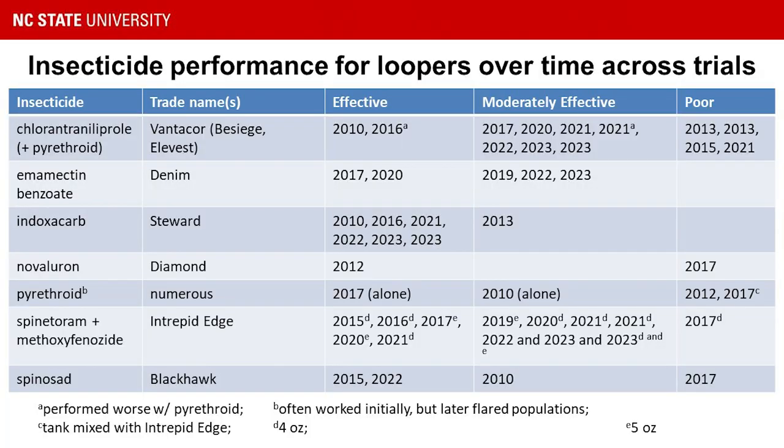Let's talk about the defoliators actually in your field — who's out there and how do we control them? Our top three insect pests in the state are corn earworm, soybean looper, and stink bug. Bean leaf beetle may be up there this year. Corn earworm is always number one, and depending on the year, soybean looper and stink bug can trade places. Soybean looper becomes more prevalent as you move toward the coast and farther south.